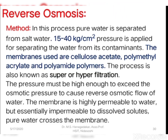In this reverse osmosis method, pure water is separated from salt water. A pressure of around 15 to 40 kg/cm² is applied for separating the water from its contaminants. The semi-permeable membranes used can be cellulose acetate, polymethyl methacrylate, or polyamide polymers. This process is also known as super filtration or hyper filtration. The pressure must be high enough to exceed the osmotic pressure, causing water to flow from the higher concentration solution side to the lower concentration side through the semi-permeable membrane.